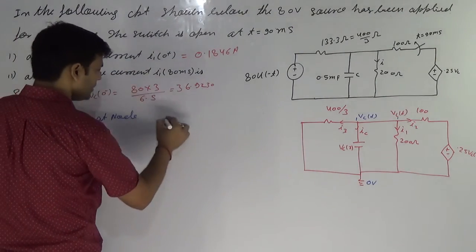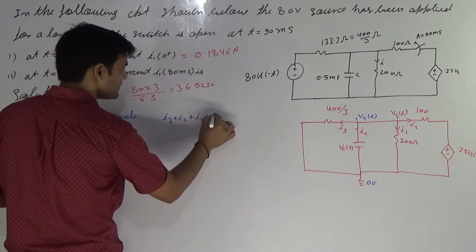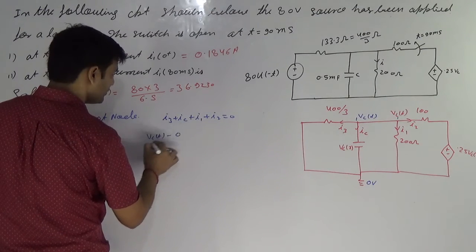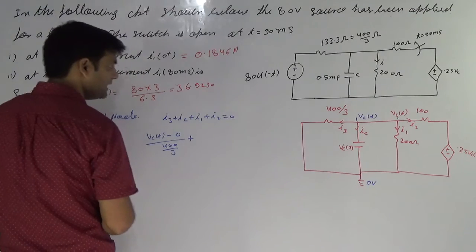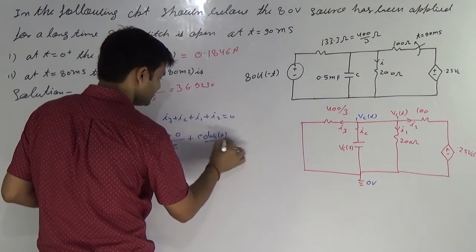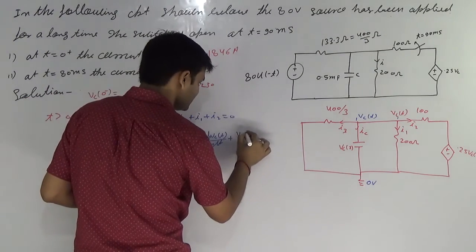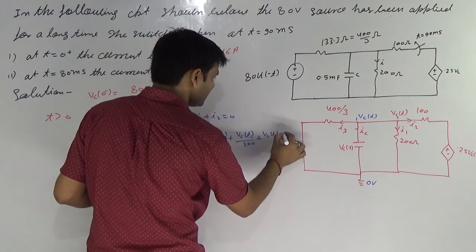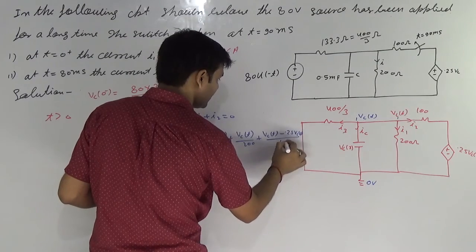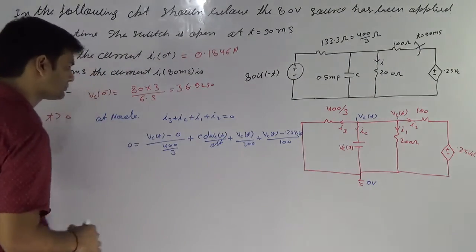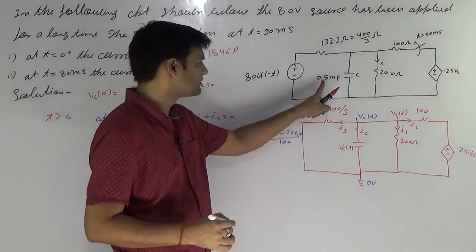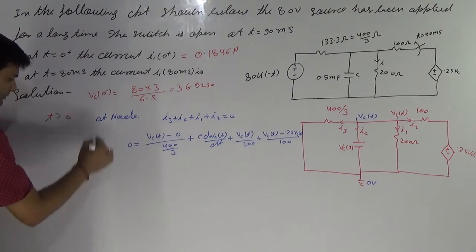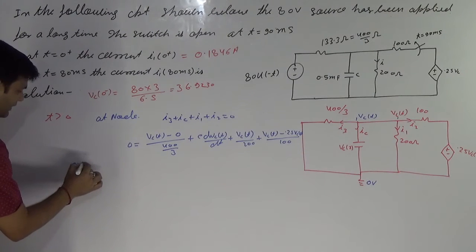VCT: now I3 plus IC plus I1 plus I2 equals zero. What is I3? VCT minus zero divided by 400 by 3. What is IC? C times dVCT/dt. Plus I1 — I1 is VCT divided by 200. Plus I2 — I2 is [VCT minus 0.25 VCT] divided by 100 — this equal to zero. What is C? C is 0.5 millifarad.